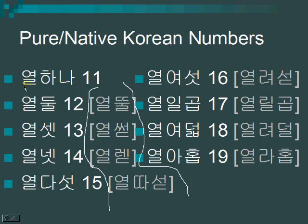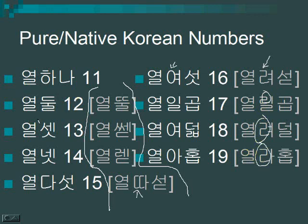여덟 — no sound change there. And in this combination, the ㄴ that should sound like ㄴ is going to sound like another ㄹ. So it sounds like a double ㄹ. If this surprises you, you should watch my video about palatalization — Sound Changes in Korean, Lesson 4 — because that's a normal sound change.